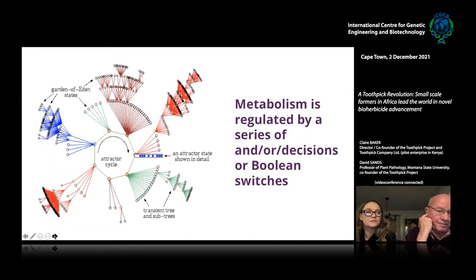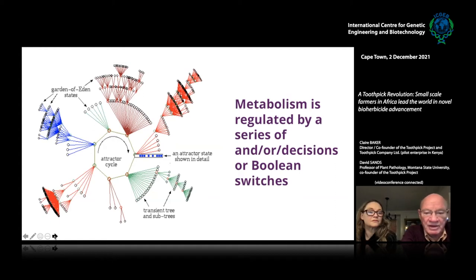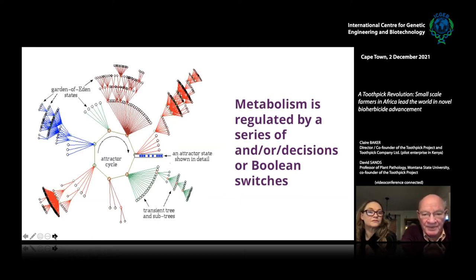About 150 years ago a man named Boole developed a decision theory. Boolean gates are the concept we use in computers, and they're amazingly like what goes on in the cell. We think we understand why certain amino acids can kill a plant. The question is: can we take this out of a factory and actually use this concept in fungi?